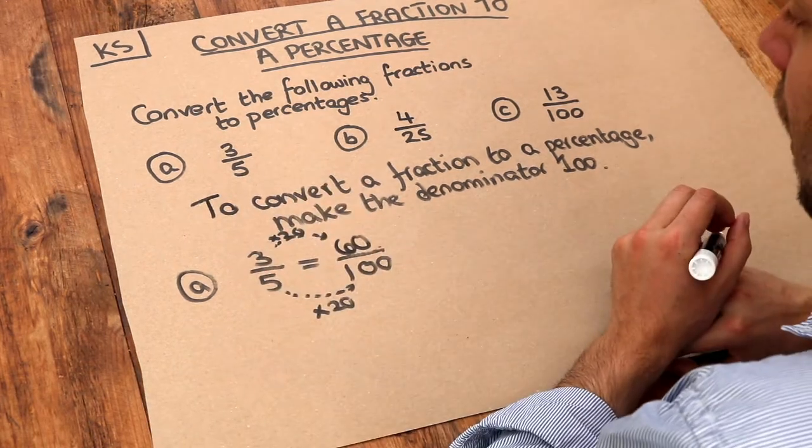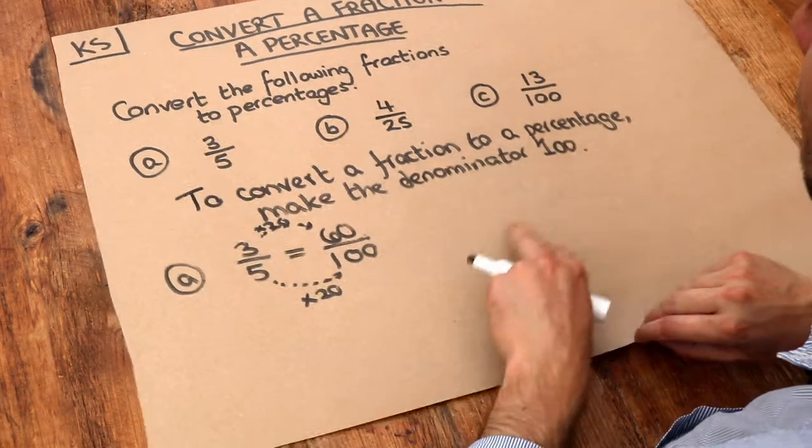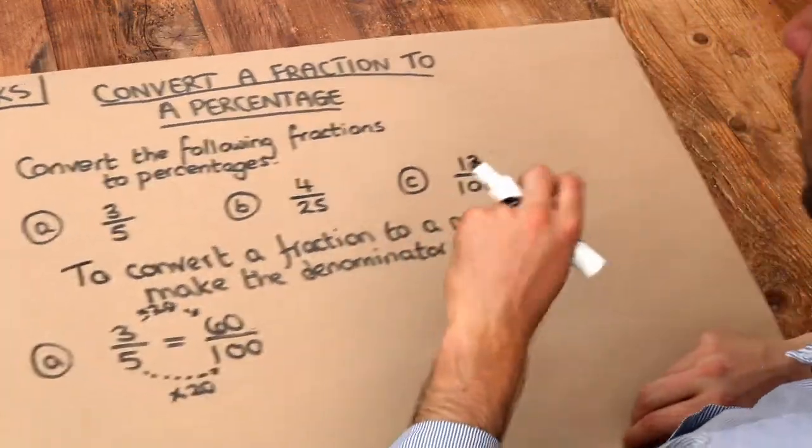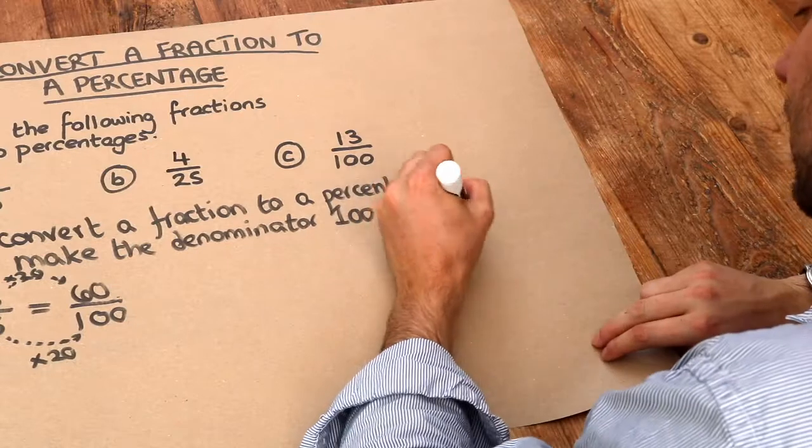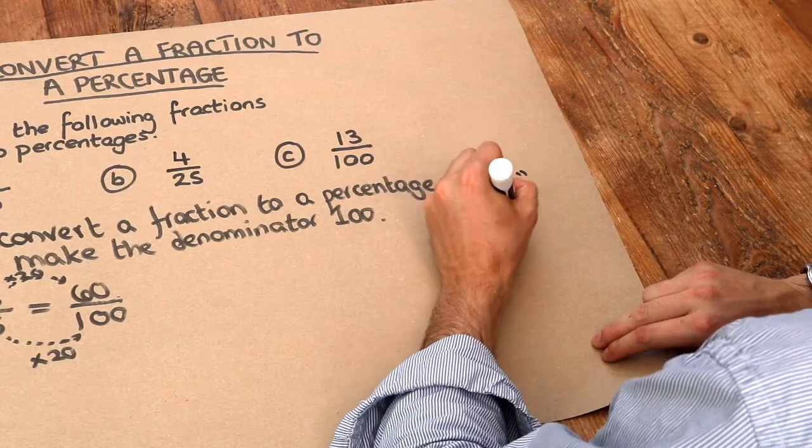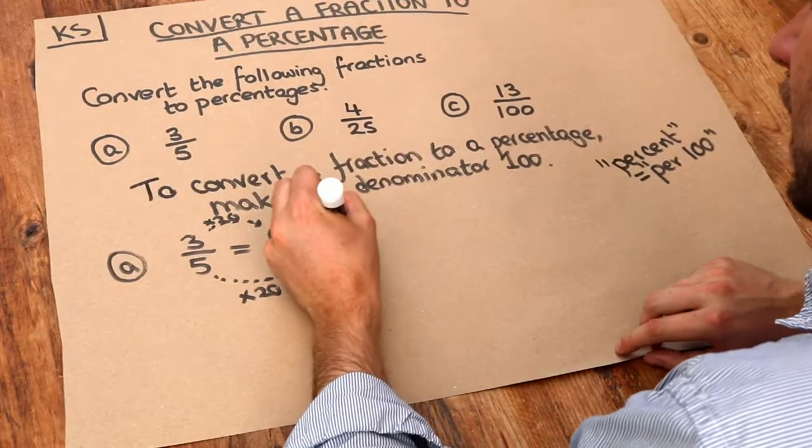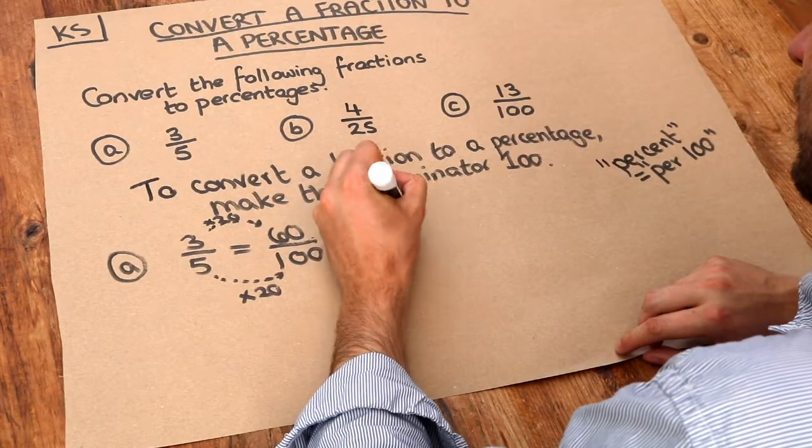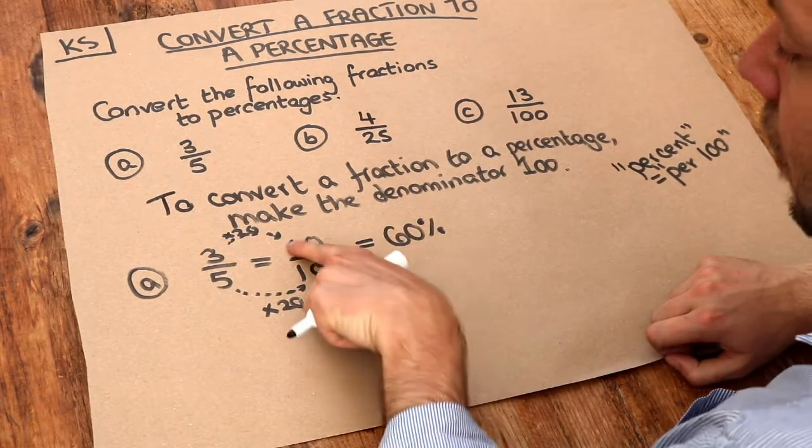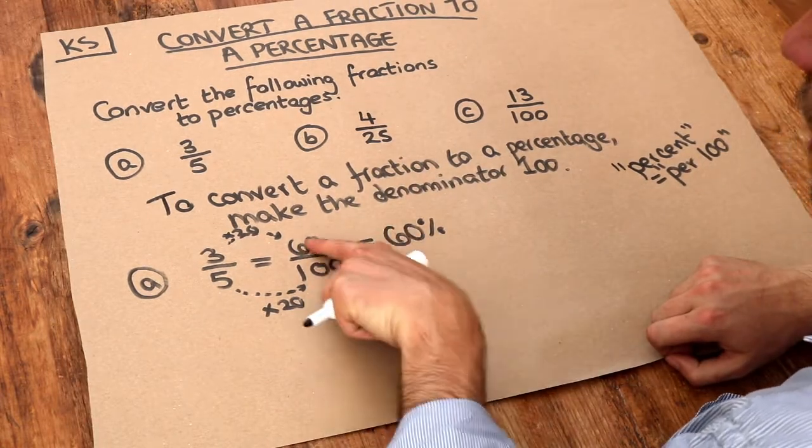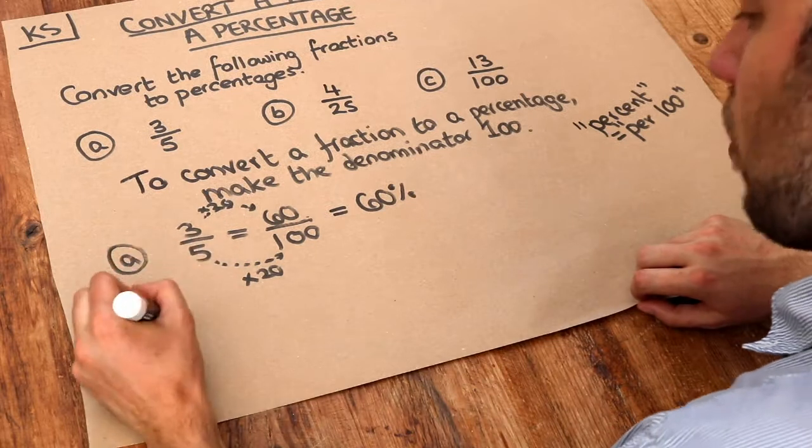We've got 60 over 100. Now the meaning of percentage is per 100. Percent means per 100. So we've got 60 things per 100, that means we have 60%. So if we've got it over 100, the numerator will be the percentage. 60, 60%. What about b?